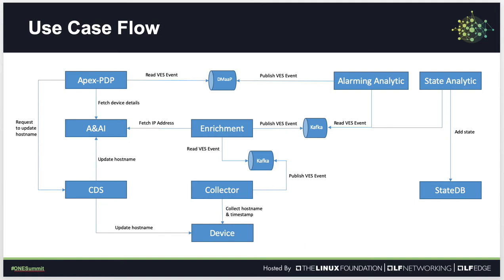The use case flow starts from the collector collecting host name and time stamp from the device, which is passed to enrichment using a VES notification event via Kafka. Enrichment reads the notification from Kafka and fetches the IP address from A&AI.